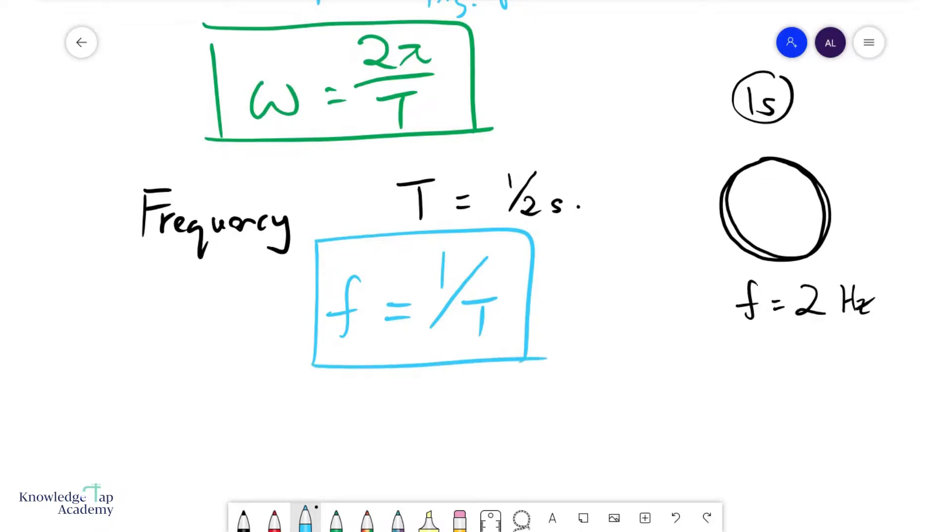Try using some examples of this and see if it makes sense. For example, a period of half a second means 1 over half is 2. Similarly, if my period was two seconds, then my frequency would only be half a revolution per second. And hence, this formula seems to make a lot of sense.